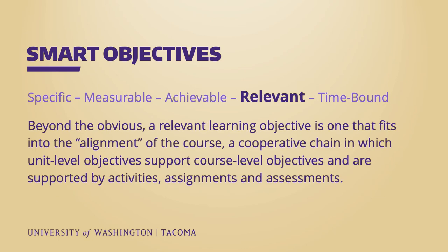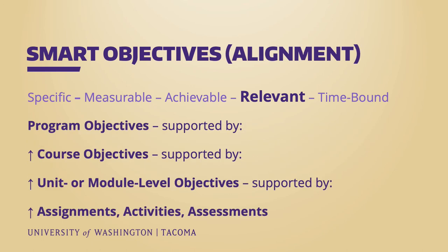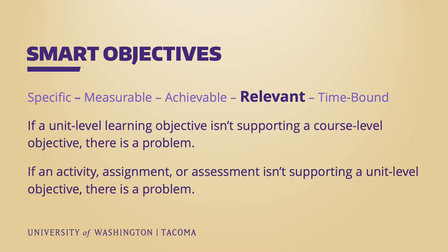Your learning objective should also be relevant. Beyond the obvious notion of relevance, a quality learning objective will be relevant to the alignment of your learning objectives. Alignment is the process of ensuring a cooperative chain in which your unit level learning objectives all support your course level objectives, which hopefully support program or degree objectives, and the activities, assignments, and assessments in your course all support specific unit level objectives. If your unit level objective doesn't directly support a specific course objective, then it is either irrelevant or one of those needs to be revised. More importantly, if you have your students doing anything in the course that you can't link to a specific learning objective, then one of them likewise needs to be revised.